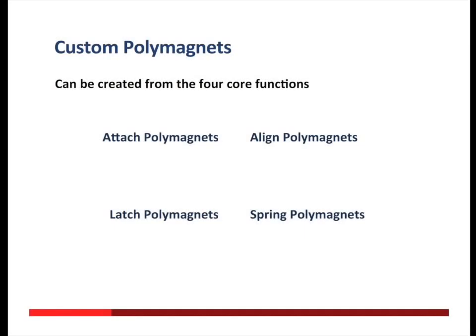As I finish up this case study discussion, I want to point out that custom polymagnets are also available. We think of the four core polymagnet functions as building blocks that can be combined in a wide variety of ways. So if your product has a case with a specific thickness, and the magnets will be a certain distance from a piece of sensitive electronics and you want a certain alignment function, look into custom polymagnet solutions. You can contact us through our website, polymagnet.com.